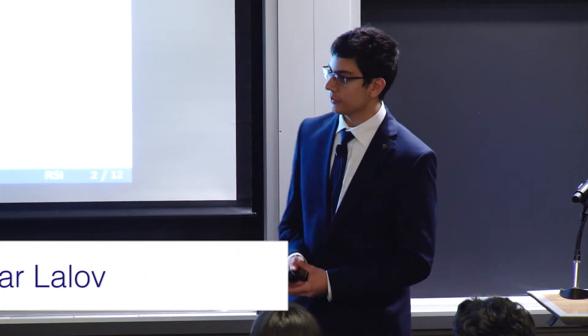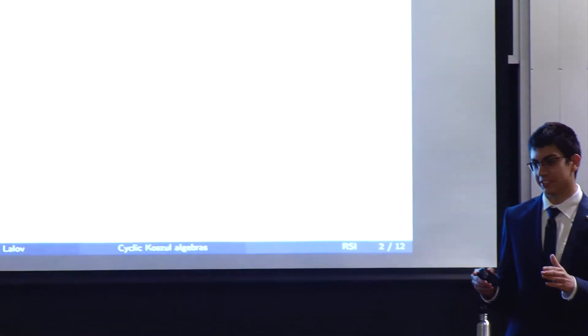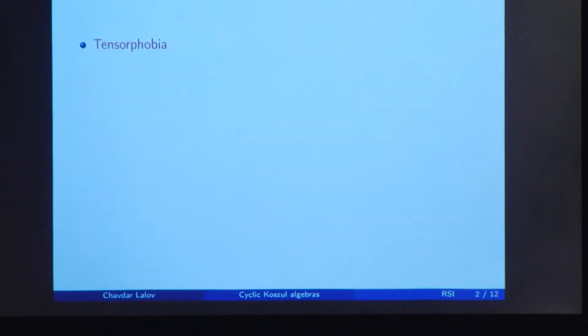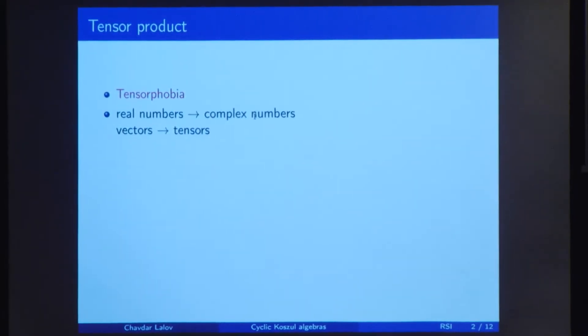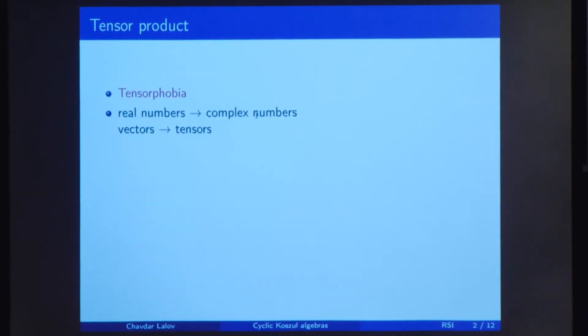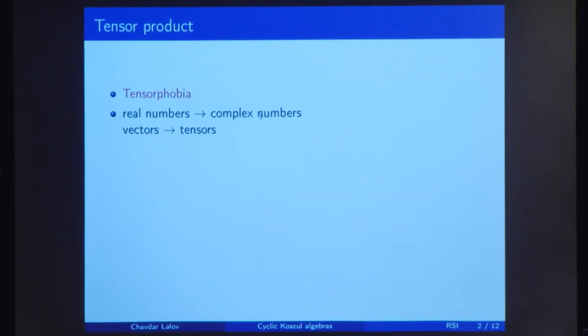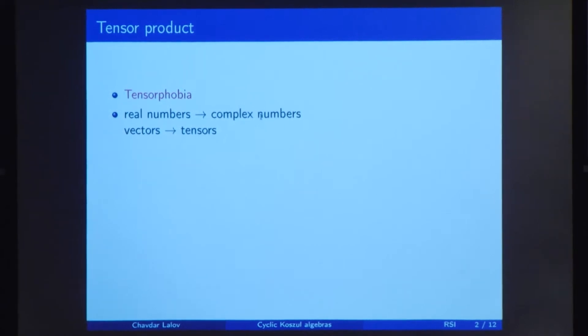So little children are afraid of ghosts. Undergraduate students are afraid of tensors and tensor product. However, in practice, these notions are not that difficult to understand. If we can say that complex numbers were the generalization of real numbers, we can say that tensors were the generalization of vectors. For example, vectors are tensors of rank one, matrices are tensors of rank two, three-dimensional arrays are tensors of rank three, and so on.